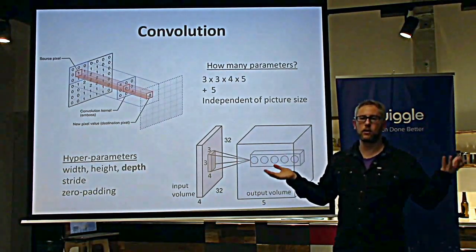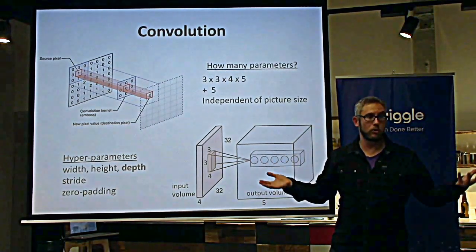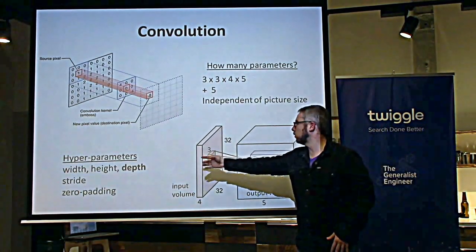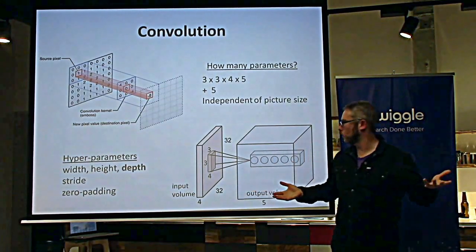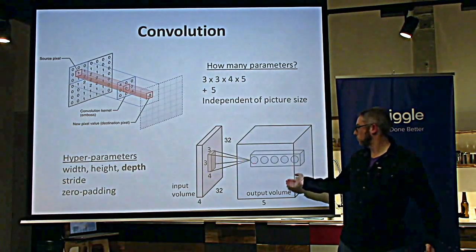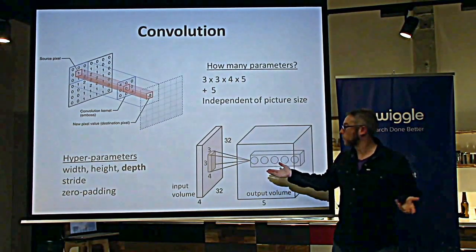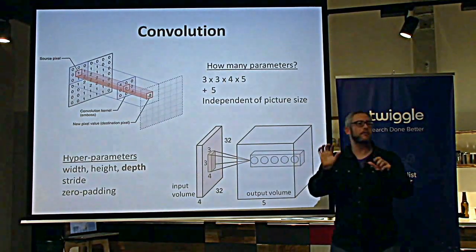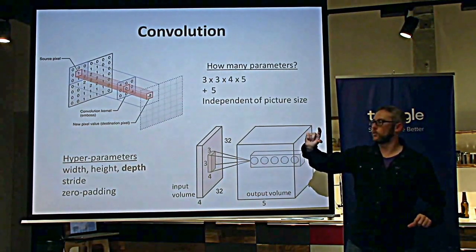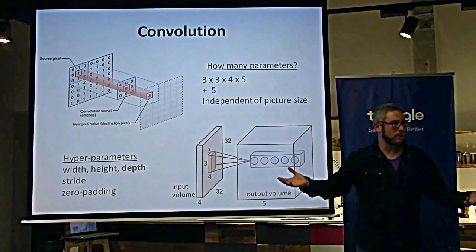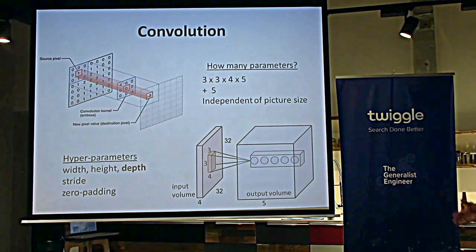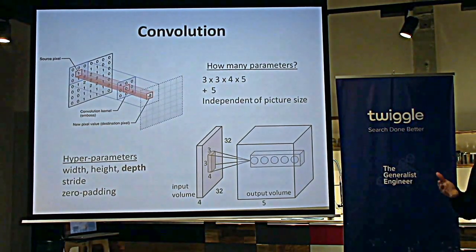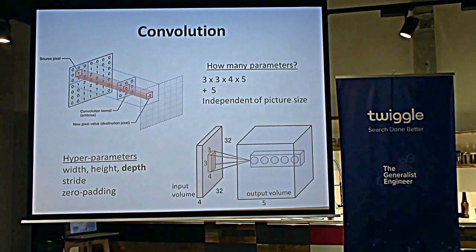We also have hyperparameters. When deciding on a convolutional layer, we can choose the width and height of the kernel — it doesn't have to be three by three; it could be five by five or ten by ten. We choose the depth, meaning the number of kernels. And we choose the stride — we don't have to move just one step to the right; we can move two or three steps. Don't ask me what the right answer is — it changes every year basically.